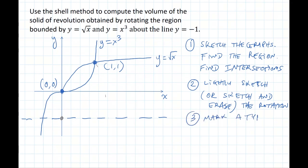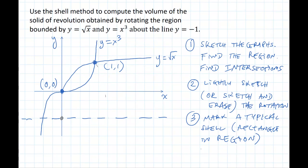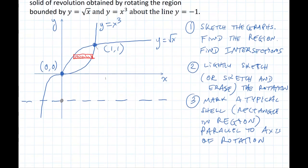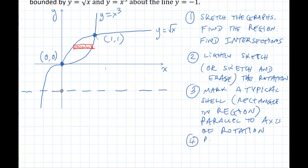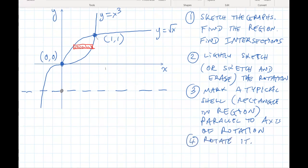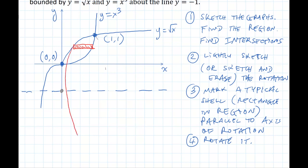Step 3. I'm going to mark a typical shell or rectangle in the region. The difference between the disk method and the shell method is that the disk method has each disk perpendicular to the axis of rotation, whereas for the shell method, each shell is parallel to the axis of rotation. So I'm going to mark a typical shell or rectangle in the region parallel to the axis of rotation, and then I'm going to rotate that. But this time when I rotate, I leave it because I'm going to need that graph.